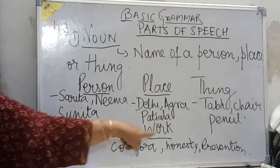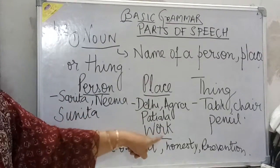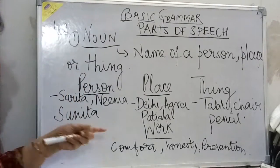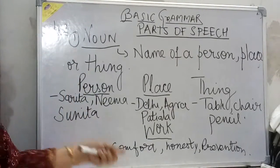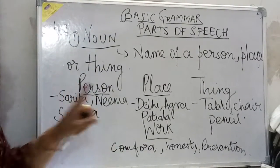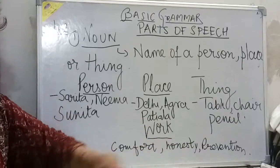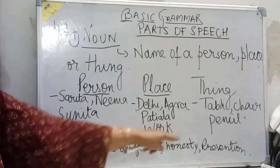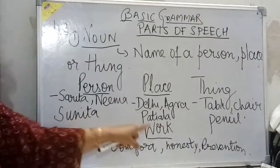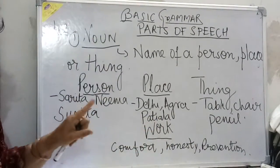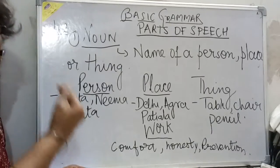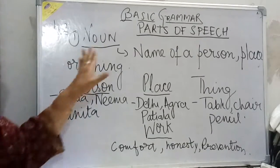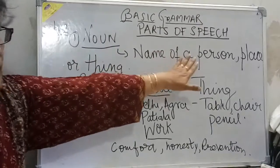There are also abstract nouns — words like comfort, honesty, prevention. These are also nouns. They are called the main nouns.